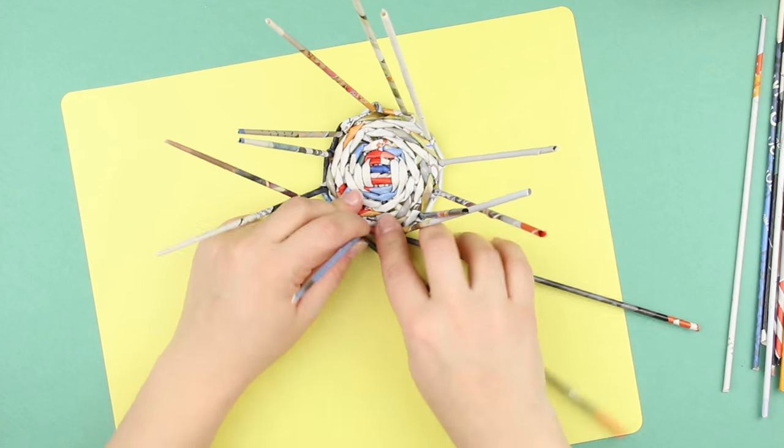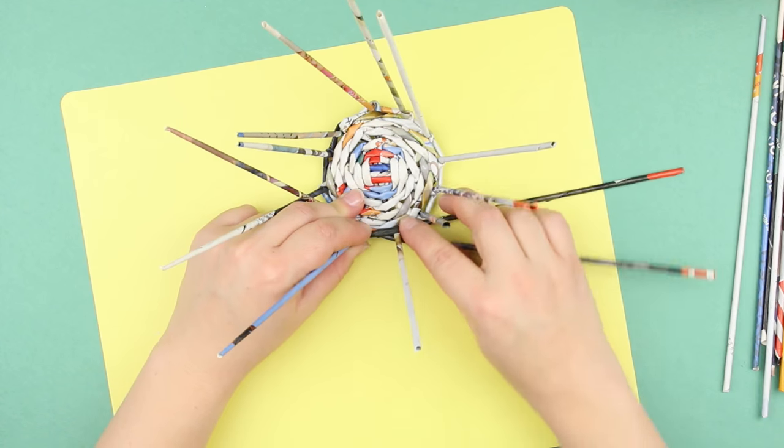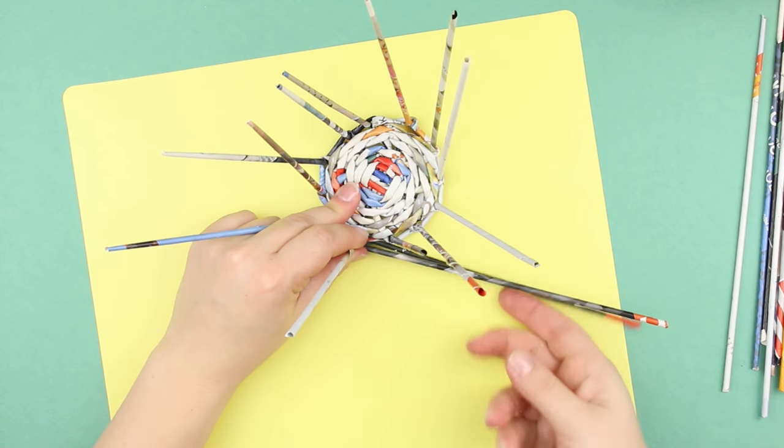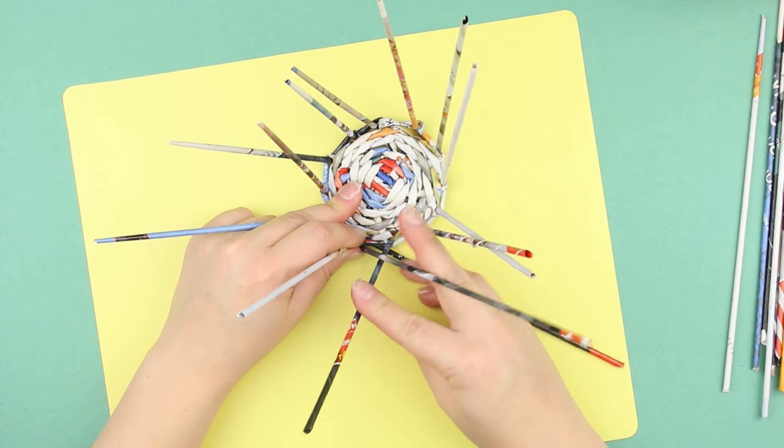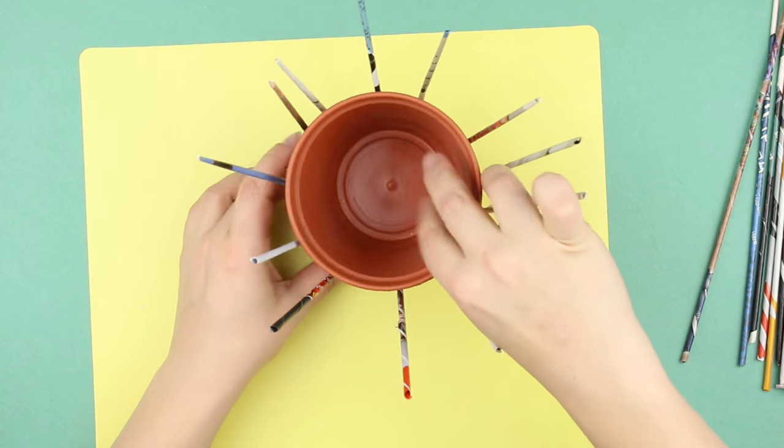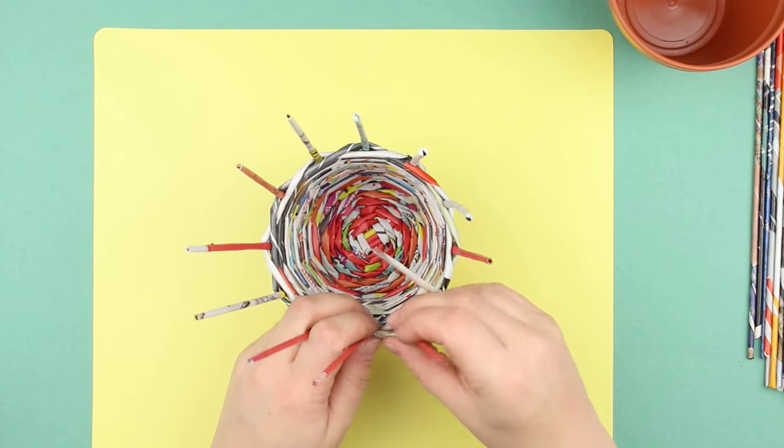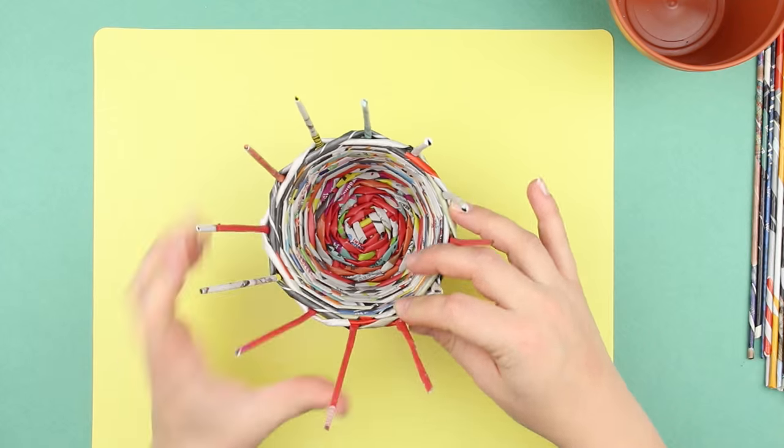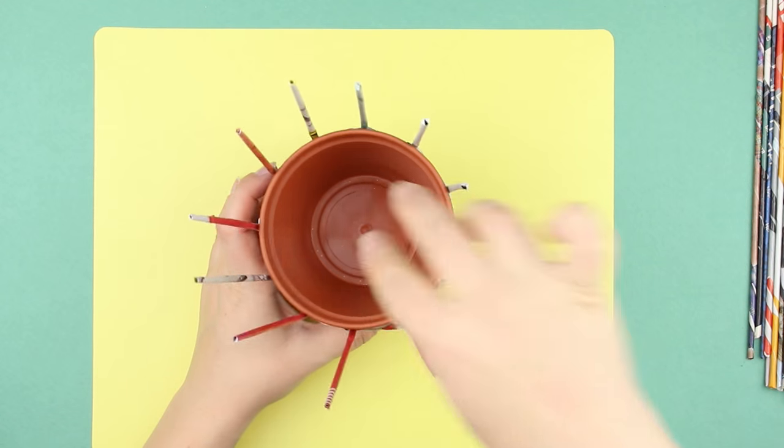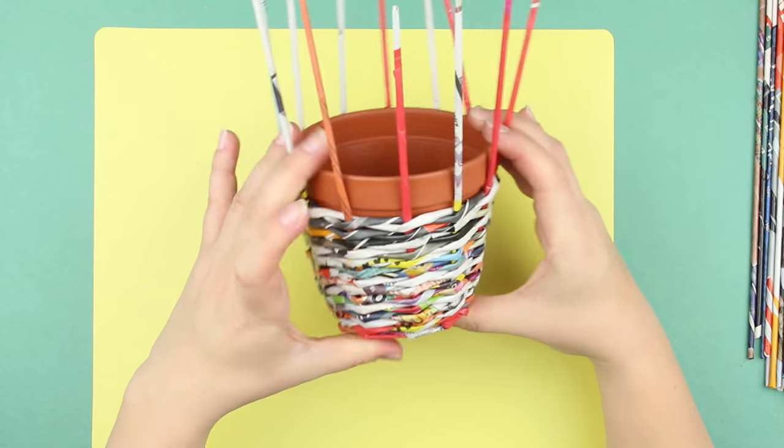Weave around the vertical stands. Be careful to increase the diameter upwards to follow the flower pot shape. Put in the flower pot to see if the height is enough. It is appropriate. You can finish weaving.